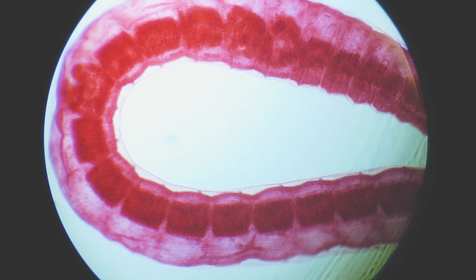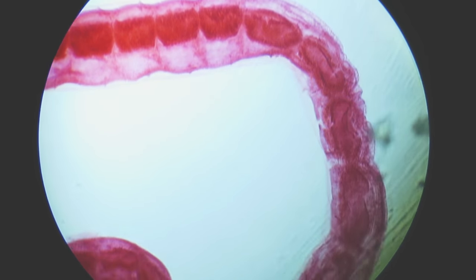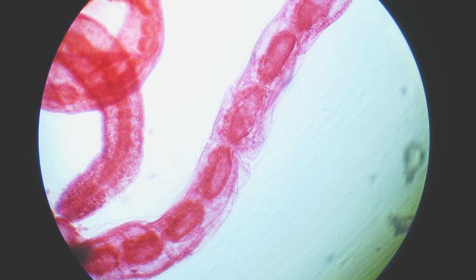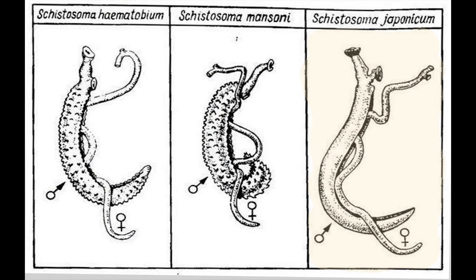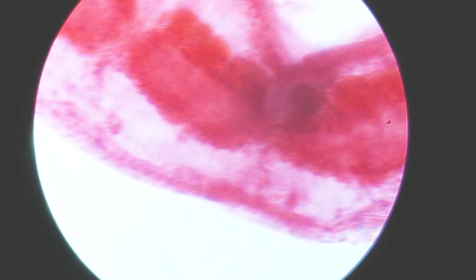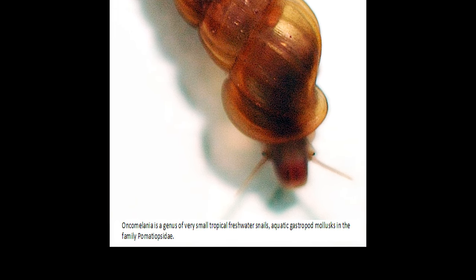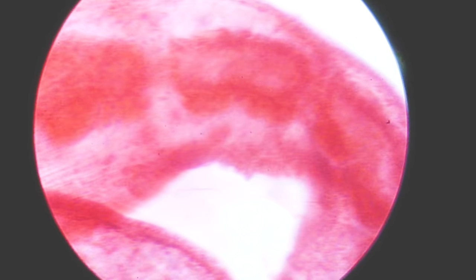The parasitic flatworms of schistosoma cause a group of chronic infections called schistosomiasis, also known as bilharzosis. An anti-schistosome drug is called a schistosomicide. S. Japonicum, whose common name is simply blood fluke, is widespread in East Asia and the Southwestern Pacific region. In Taiwan this species only affects animals, not humans. Freshwater snails of the genus Oncomelania are an important intermediate host for S. Japonicum.